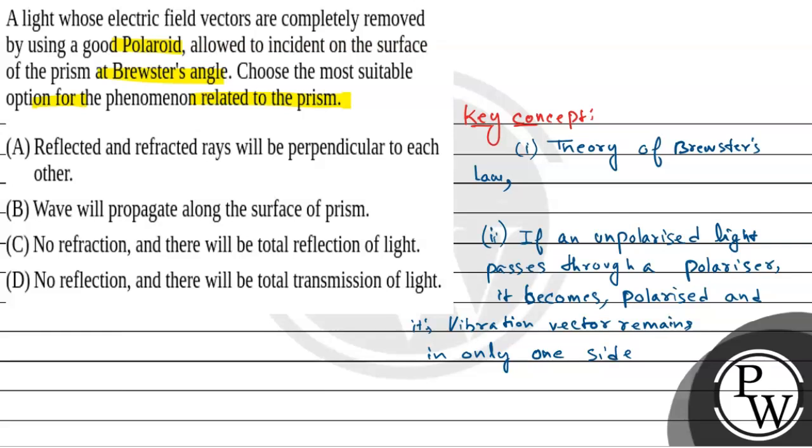its vibration vector remains in only one side. That means, let's say, an unpolarized light here. It is a polarizer, it passes over.